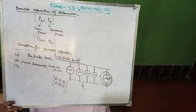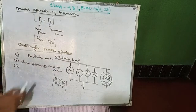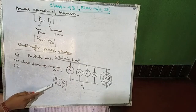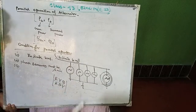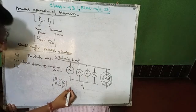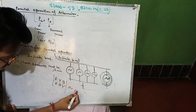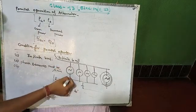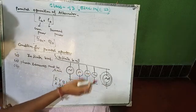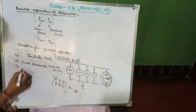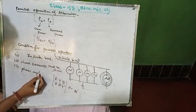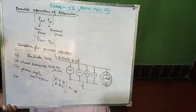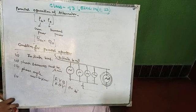Third condition: the phase angle of the generated EMF of the incoming alternator must be exactly the same as the terminal voltage of the running alternators. Whatever the phase angle — whether 80 degrees, 30 degrees, or 50 degrees — it must be the same for all running alternators and the incoming alternator.